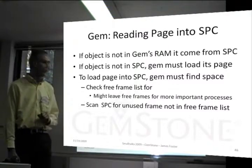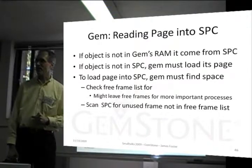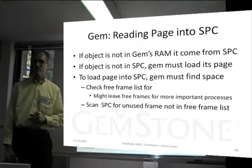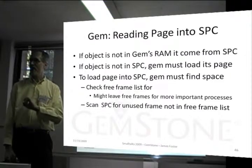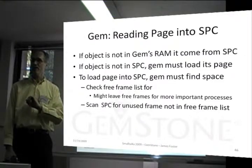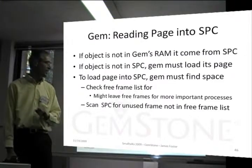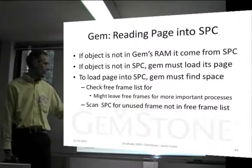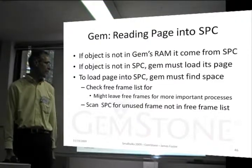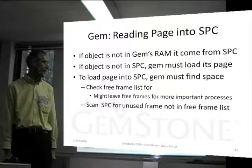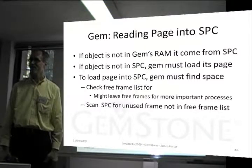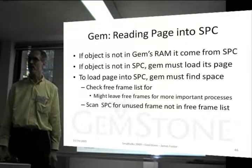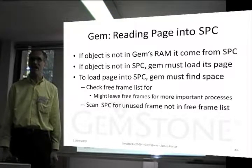We check the free frame list for space. If the free frame list is short and there's no space, then we have to scan the shared page cache for an unused frame that's not in the free list, and then we can use that frame.